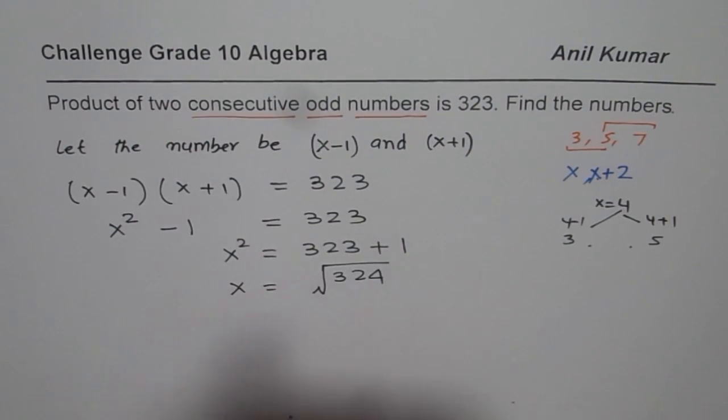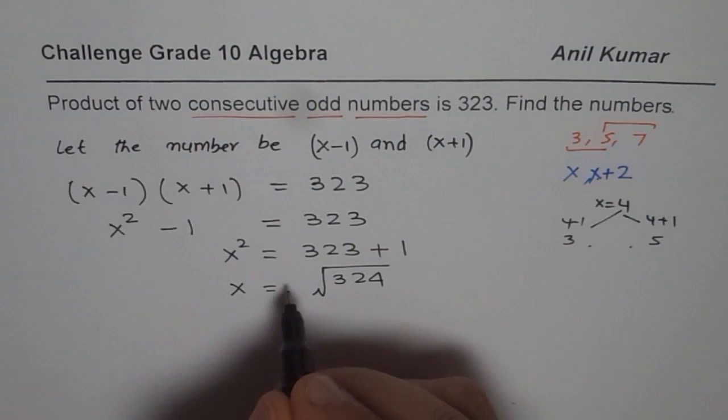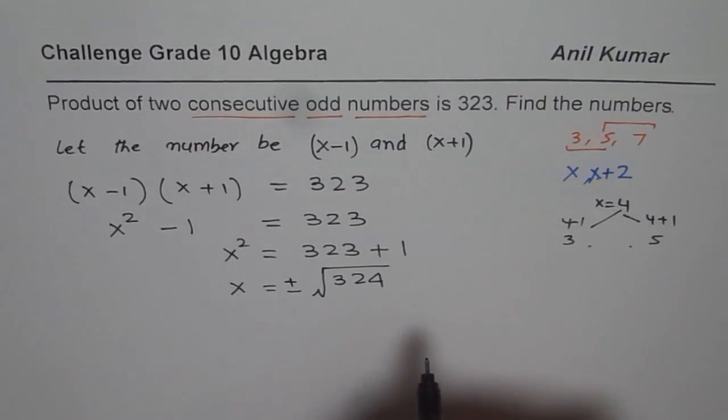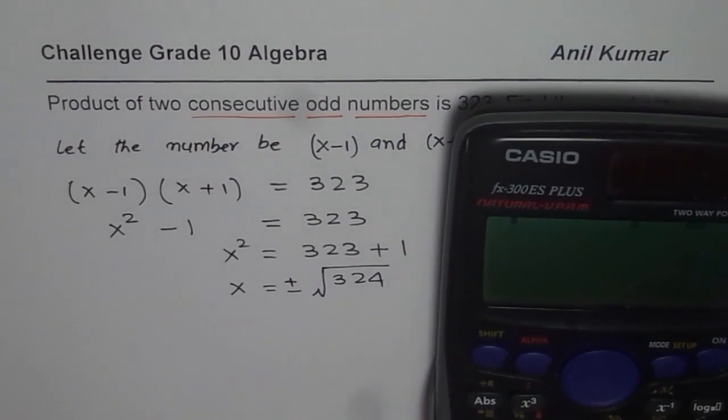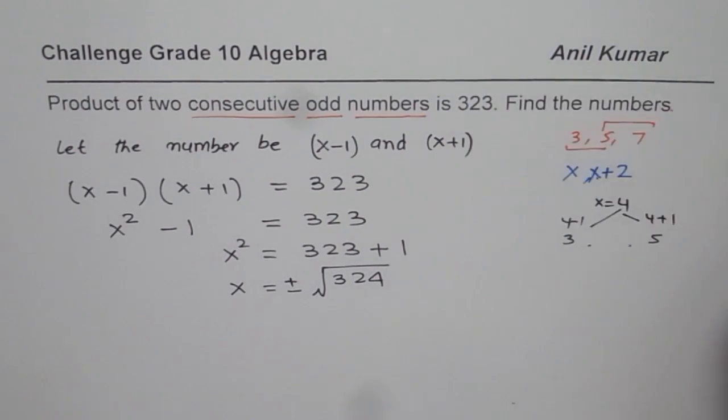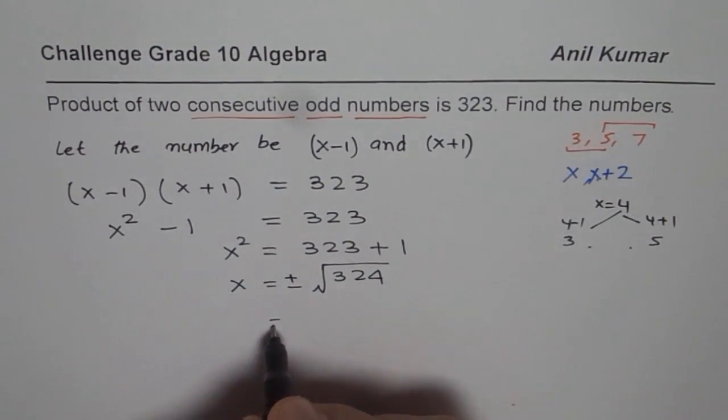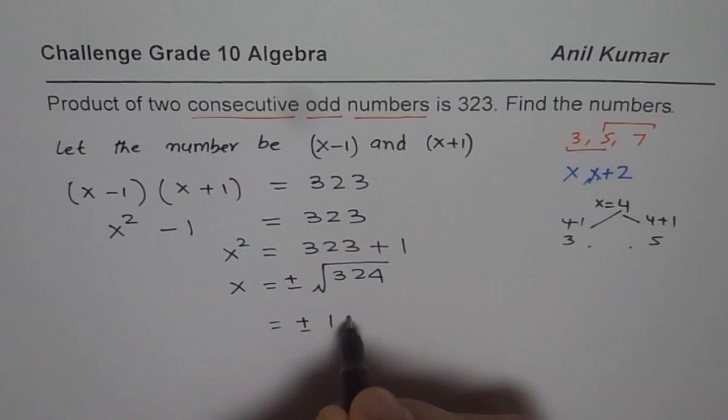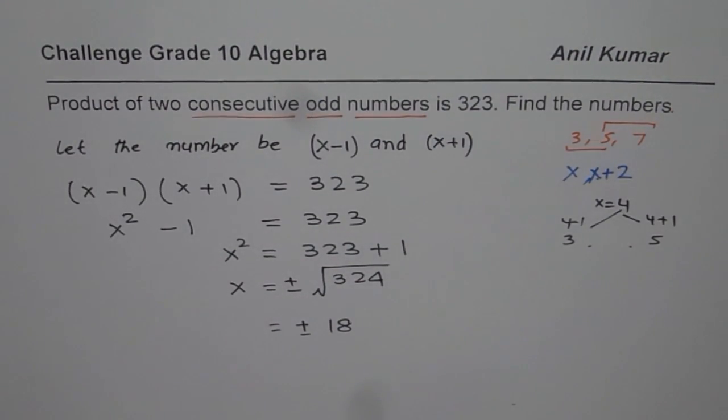Now whenever you do square root you should do plus and minus. So when you do plus and minus you expect two answers for x. Let us do square root of 324. So square root of 324 is equal to 18. So what we get here is plus and minus 18. And therefore what should be our numbers?